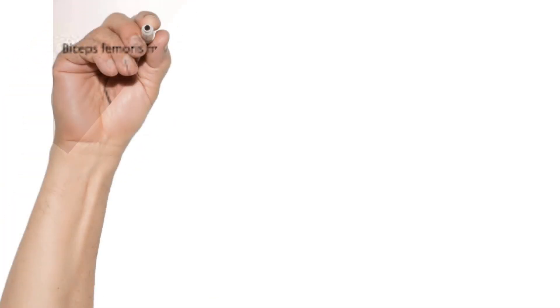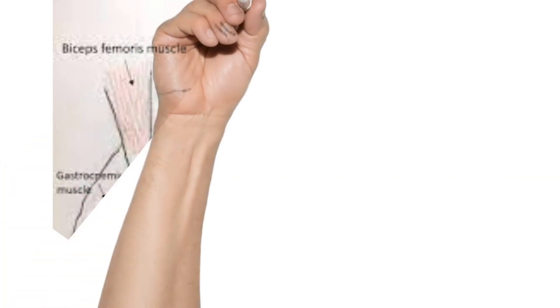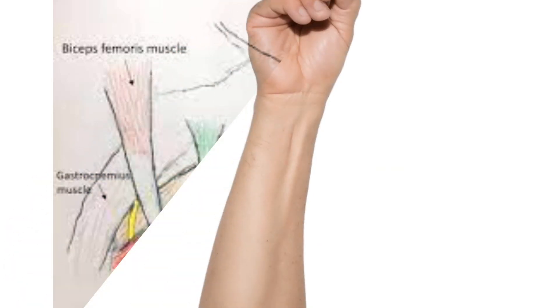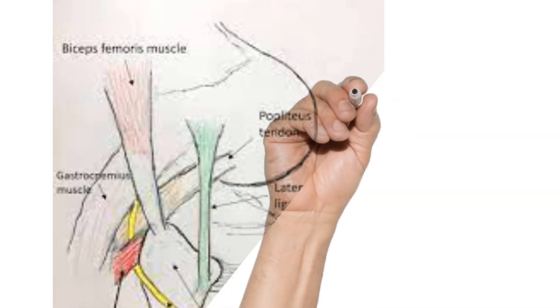Regarding the popliteofibular ligament, it is attached to the fibula and inserted into the myotendinous junction of the popliteus, attached on the fibula just posterior to the LCL. From anterior to posterior, the structures attached to the fibular head are: most anterior is the lateral collateral ligament, in the middle is the popliteofibular ligament, and the most posterior is biceps femoris.